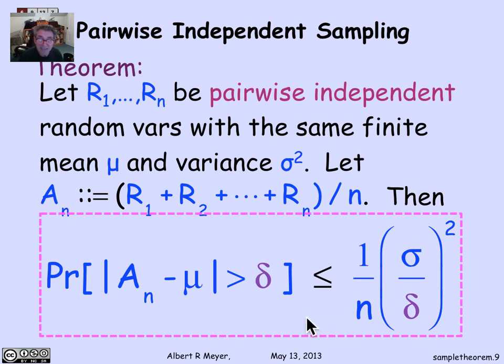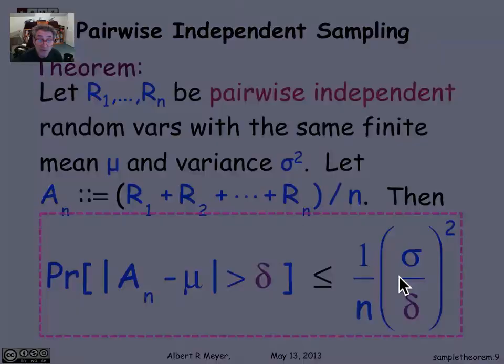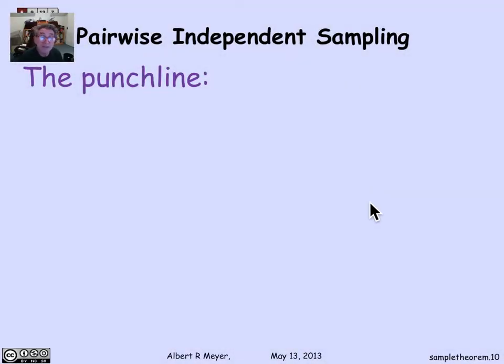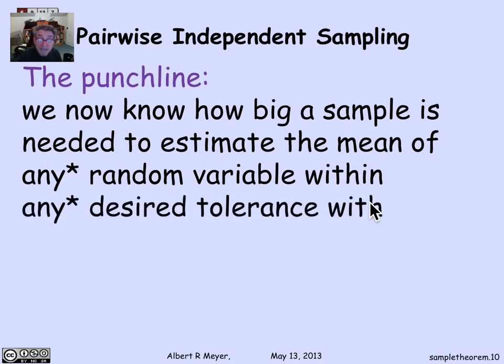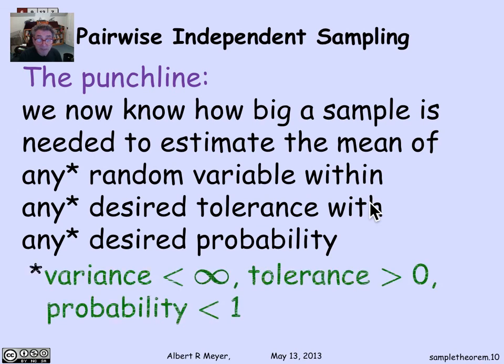Now, what this tells us here is that now, if you tell me what delta is, and you tell me how small you want this to be, I know what I'm given sigma, and you give me the delta that you specified. And if you tell me how small you want this to be, I will know how big an n to choose. So this tells me how big a sample I need, how many tries I have to make in order to get the probability that the mean is within a specified tolerance delta as small as you specified. And that is our independent sampling theory. That's why it's called independent sampling, because we now know how big a sample is needed to estimate the mean of any random variable with any desired tolerance and any desired probability, where, of course, the variance has to be finite, the tolerance has to be positive, and the probability has to be less than 1.